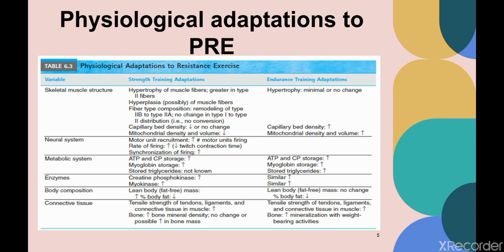For neural system adaptation due to strength training, motor unit recruitment increases, rate of firing increases, and synchronization of firing also increases. In the metabolic system, strength training increases ATP storage and myoglobin storage; creatine phosphokinase and myokinase also increase. Similar metabolic effects are seen with endurance training. For body composition, strength training increases lean body (fat-free) mass and decreases body fat percentage.